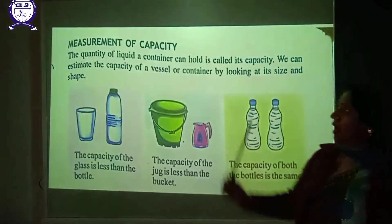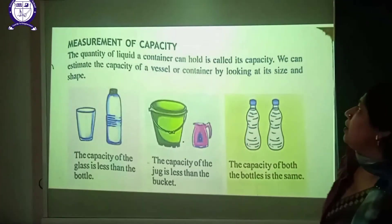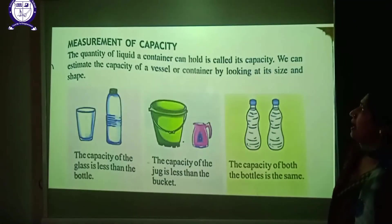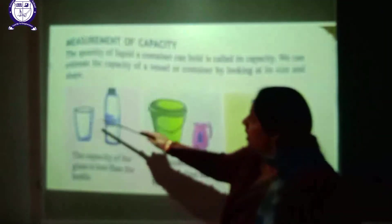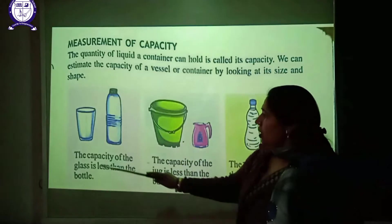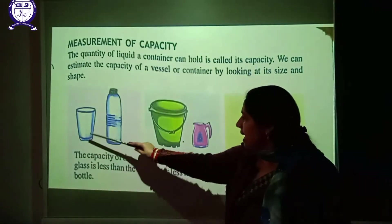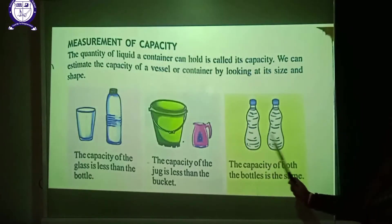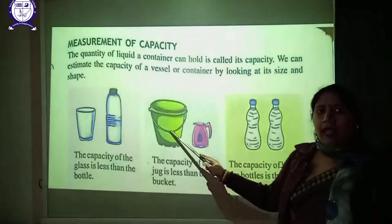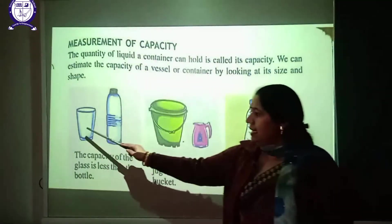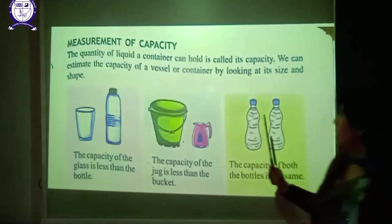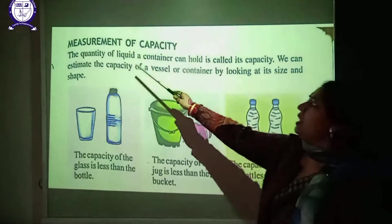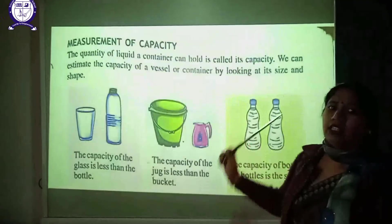Measurement of capacity. The quantity of liquid a container can hold is called its capacity. We can estimate the capacity of a vessel by looking at its size and shape. The capacity of a glass is less than a bottle. The capacity of a jug is less than a bucket. Two bottles of the same size have the same capacity.